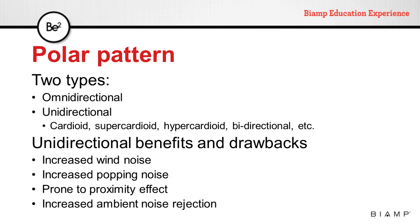Polar patterns can come in two types: omnidirectional and unidirectional. Unidirectional can be cardioid, supercardioid, hypercardioid, bidirectional, and more.